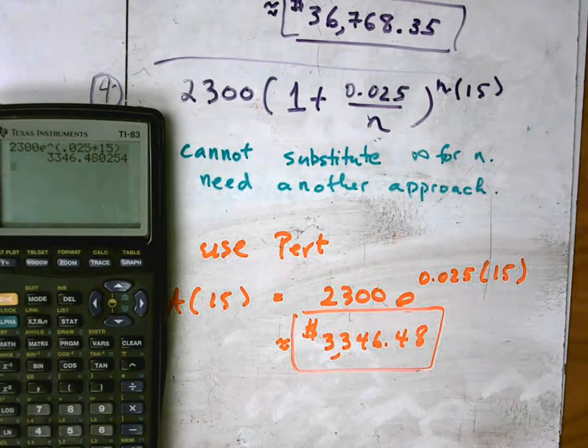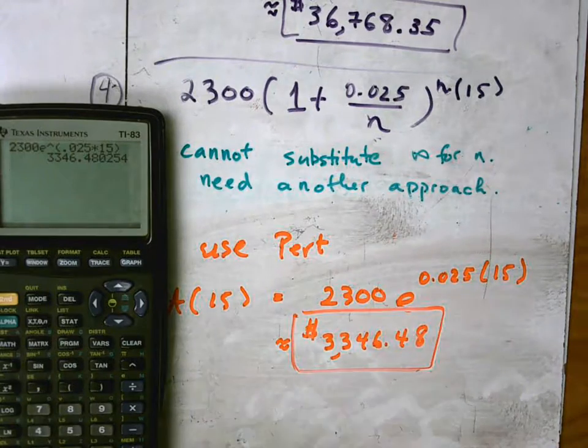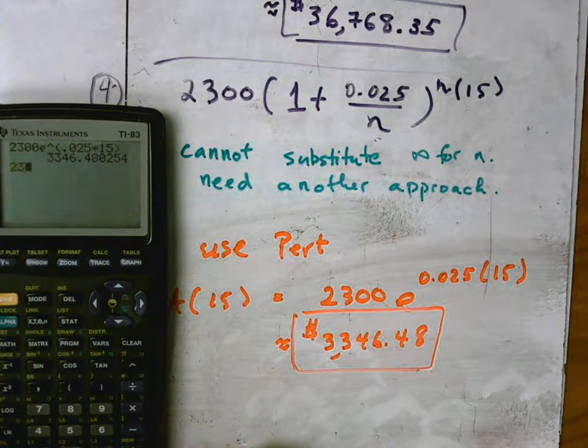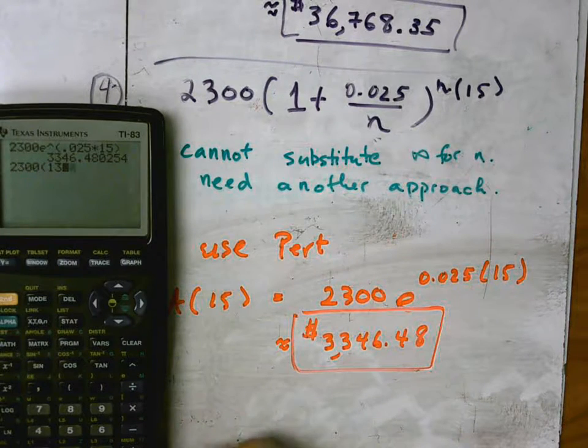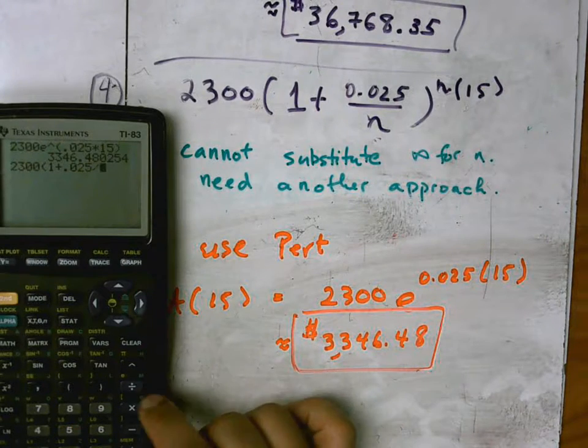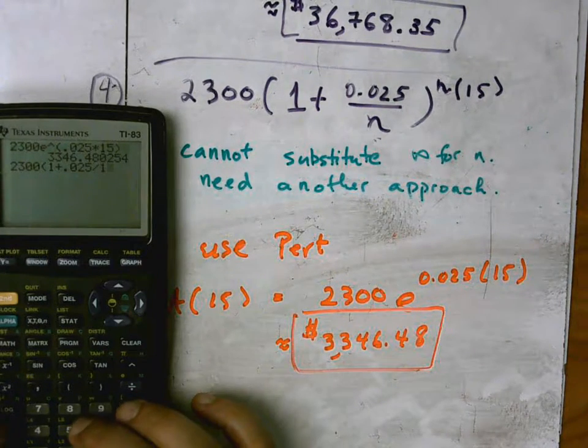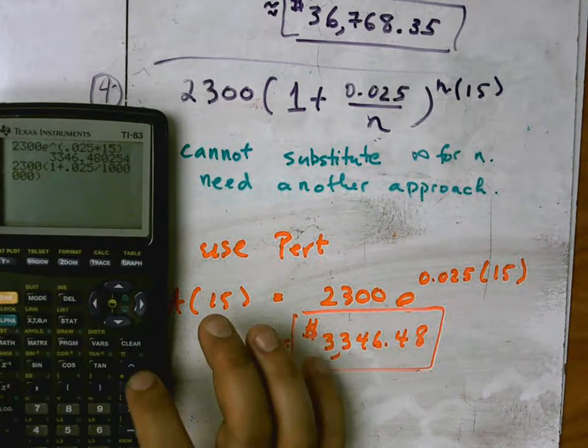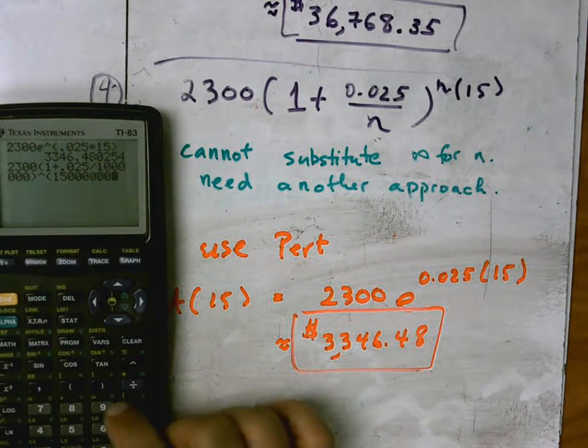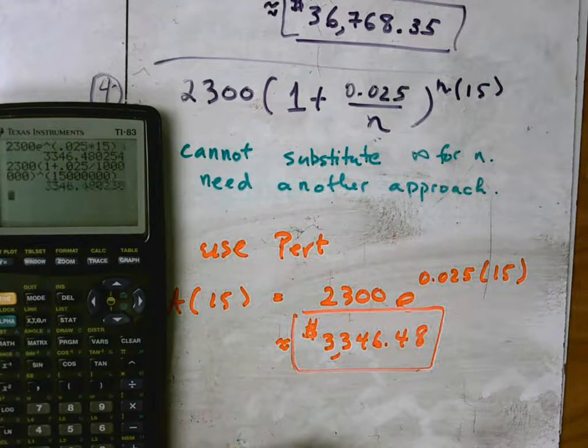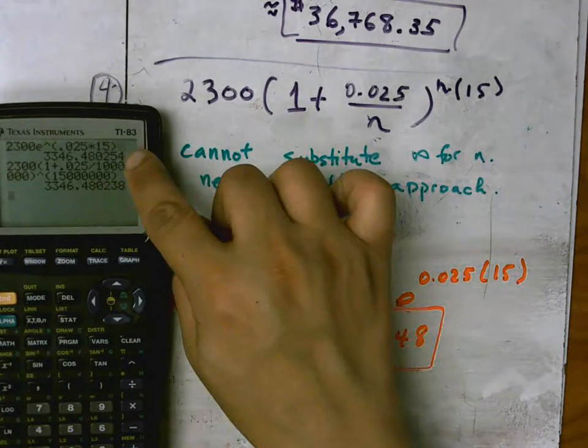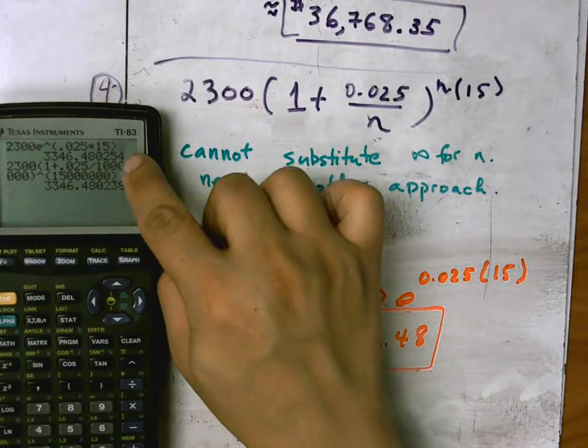And that is our final answer for this problem. And just so that you see this sort of works, we could try to estimate it using infinity. So if we use it the other way, we could have done 2300 times 1 plus 0.025 divided by, and let's pick some gigantic numbers. So maybe a million raised to the million times 15 or 15 million here. And you see that we get almost the same answer.